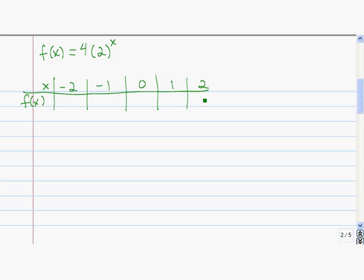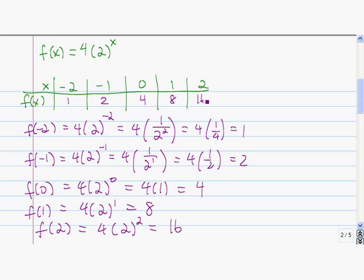Fill in the missing y values here for the function f(x) = 4(2)^x. These are the values you should have gotten. We see that as x gets larger and larger, 2 to the x gets larger and larger, so the function values grow. As x becomes more and more negative, whenever we have a negative exponent, we end up having a fraction. And as x becomes more and more negative, the denominator of that fraction gets bigger and bigger, so the y value gets closer and closer to 0.